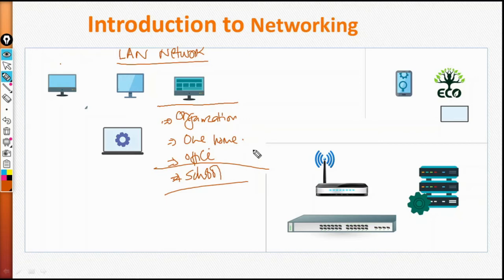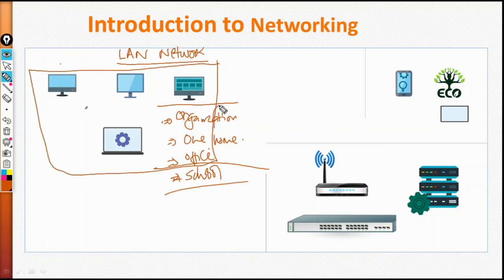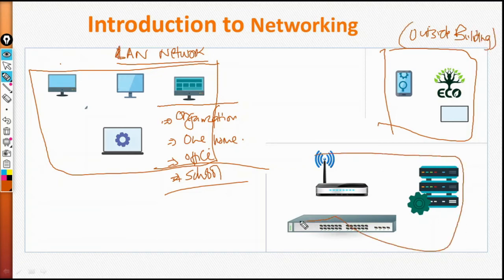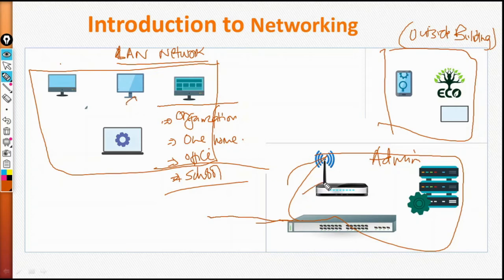When a network is restricted to a certain small area that is under the control of an organization, this is what we call a Local Area Network. In my diagram, I have equipment that are inside the office, some equipment outside the building, and another area for administration. The switch is connecting devices in the office, the server room, and outside — including the place where you go out and relax, perhaps under a tree.